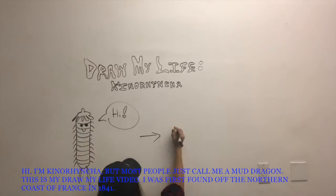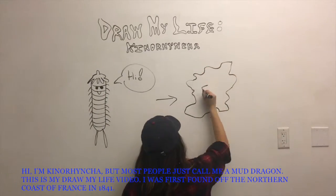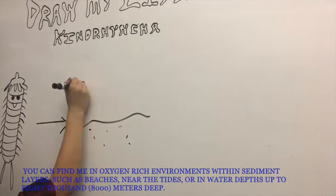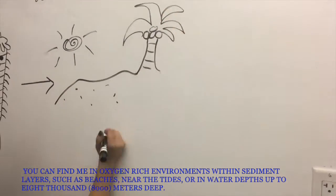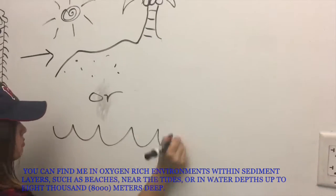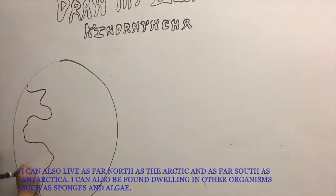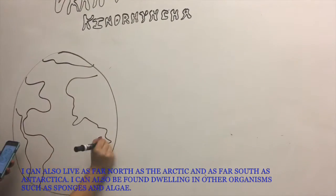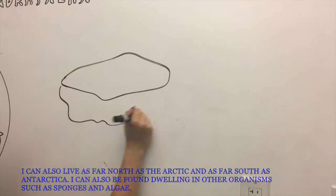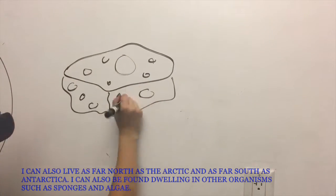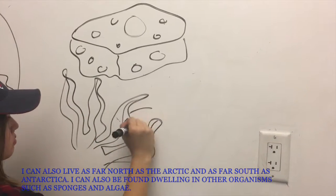I was first found off the northern coast of France in 1841. You can find me in oxygen-rich environments within sediment layers such as beaches, near the tides, or in water depths up to 8,000 meters deep. I can also live as far north as the Arctic and as far south as Antarctica, and I can also be found dwelling in other organisms such as sponges and algae.